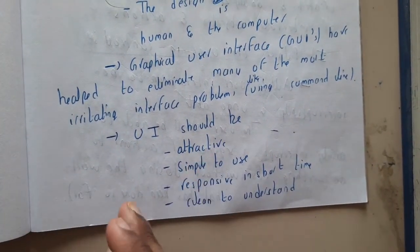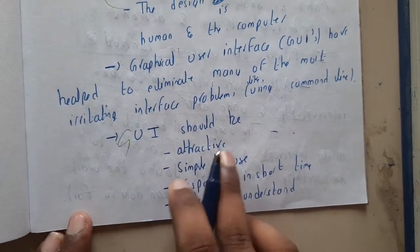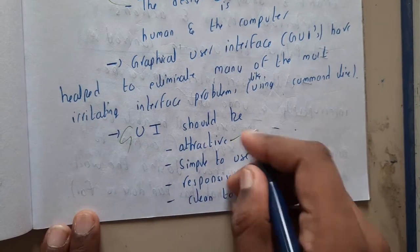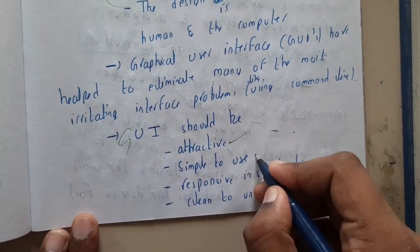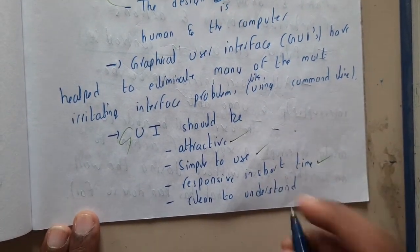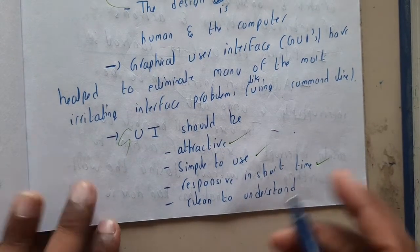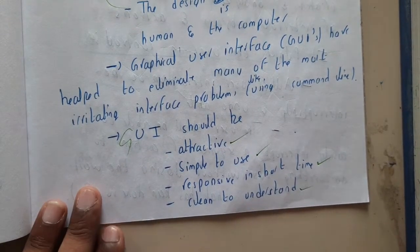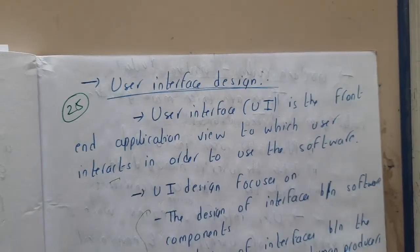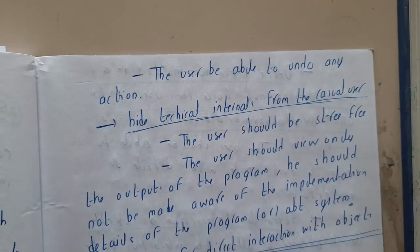In a graphical user interface (GUI), it is attractive, simple to use, responsive, and fast — you can click and it opens quickly. Everything will be fast, and it is clean to understand. This is just an introduction about user interface.